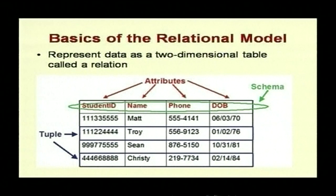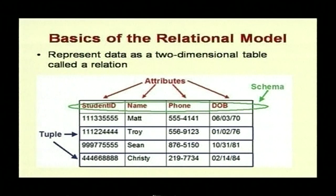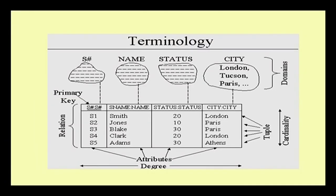To summarize the basics of a relational model: data is represented as a two-dimensional table called a relation. The attributes of the relation form the relational schema, along with the domains — what types they are. The rows are tuples of the relation, and the schema together with the tuples is called the relational instance.